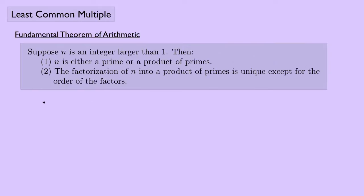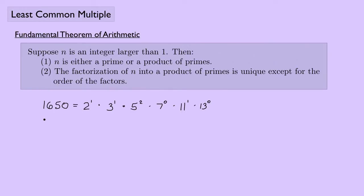Let's look at an example. Suppose I have the number 1650. I'm going to write this as a product of primes, because this itself is not a prime number. So I write this as 2 to the first power, times 3 to the first power, times 5 to the second power — so I have two fives there — times 7 to the zero power, times 11 to the first power, and then 13 to the zero power. If you multiply all these together, you end up getting 1650.